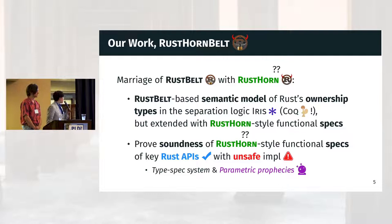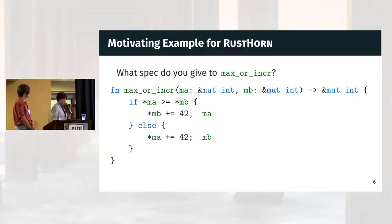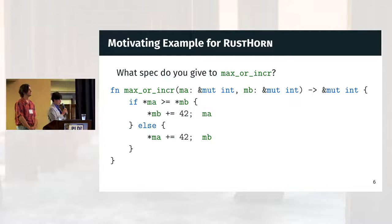What the heck is RustHorn more concretely? Consider the following Rust function, max_or_incr, as a motivating example. Roughly speaking, this function inputs two integer pointers and outputs the one with the larger target value, and after incrementing the other one by 42.